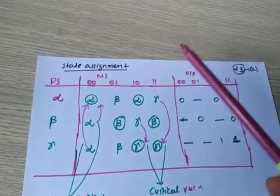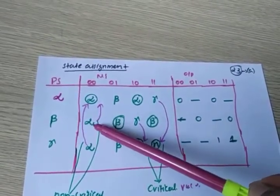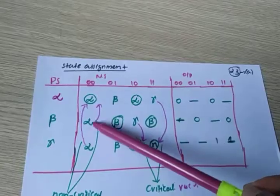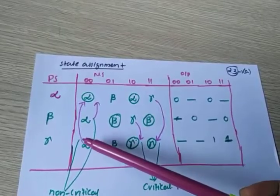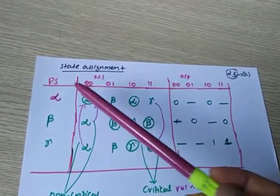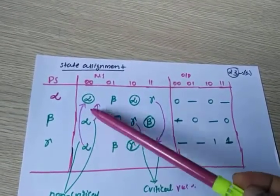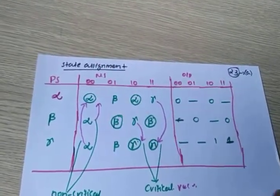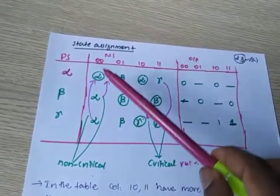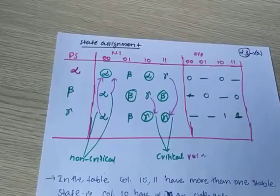Now look at column 0-0 — there is no critical race here. Beta goes to alpha; alpha is not stable initially, but check alpha — alpha is stable, so it is a direct single transition. If an instability occurs, it will eventually after one transition reach the stable state. There is only one stable state, so there is no uncertainty — this is a non-critical race. The critical race is the problem we have to overcome.